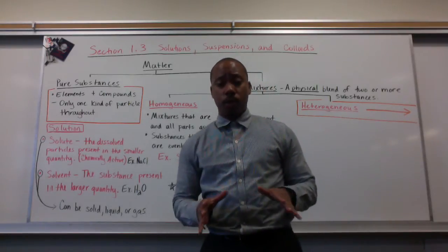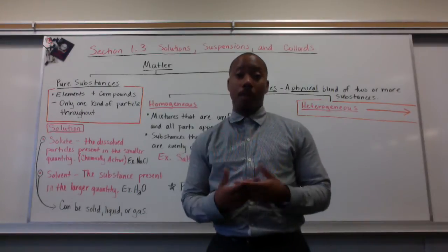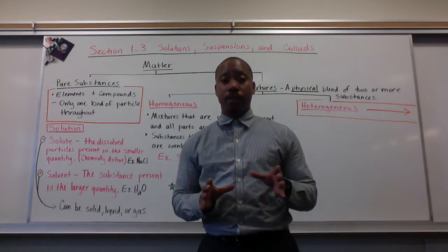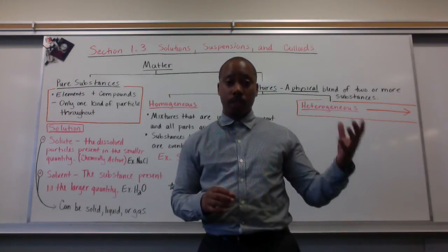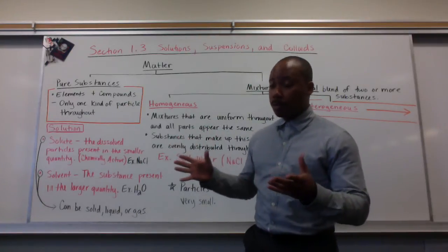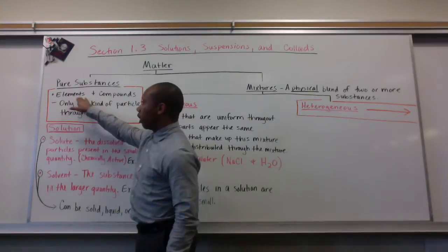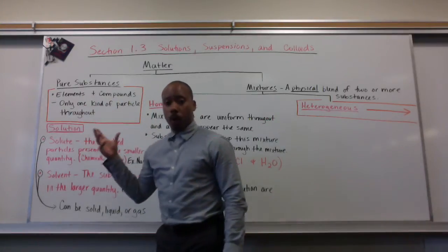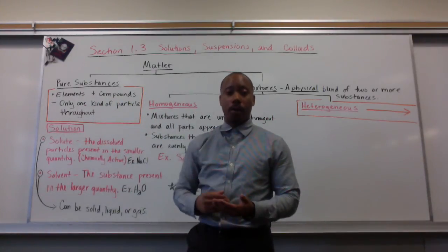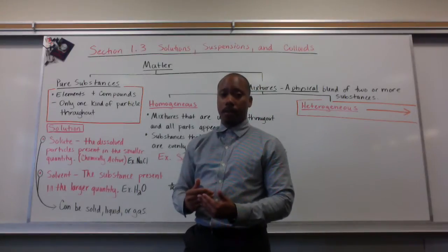Back in section 1, you were introduced to what matter is. Matter was separated into two major categories: pure substances and mixtures. When we talked about pure substances, we said pure substances were elements and compounds, and they were only one kind of particle throughout — meaning all one element, all one compound.